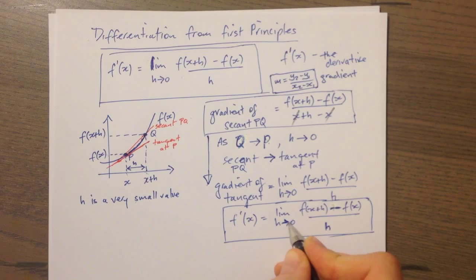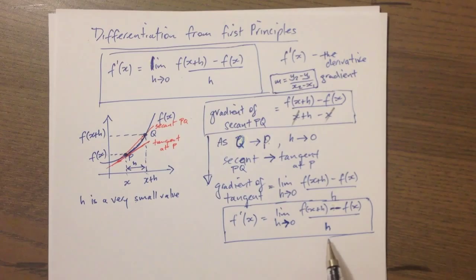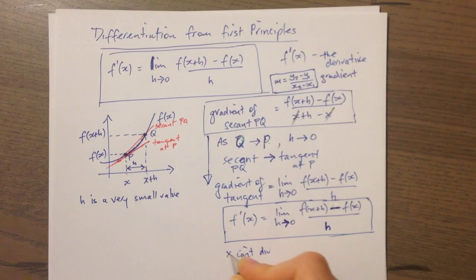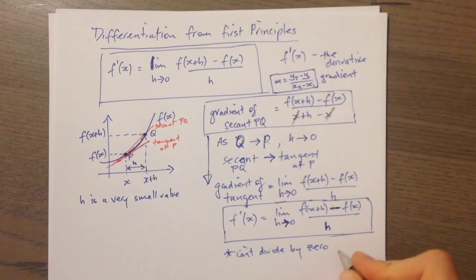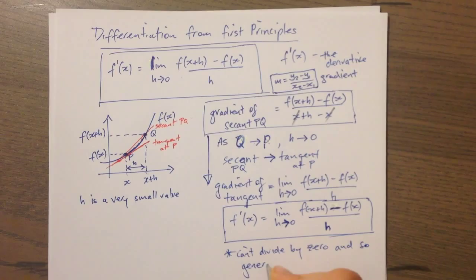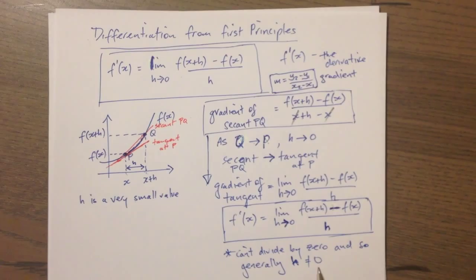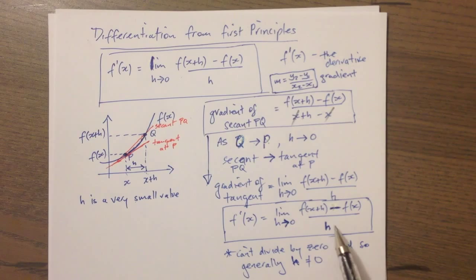Now, if we could somehow make h equal to zero, then we'd be there — the problem is we're dividing by h in this formula, so we can't make h equal to zero. You can't divide by zero. So h cannot equal zero. But there is a slight trick we do in practice, and that is to make h equal to zero by first disappearing the h from the denominator position.